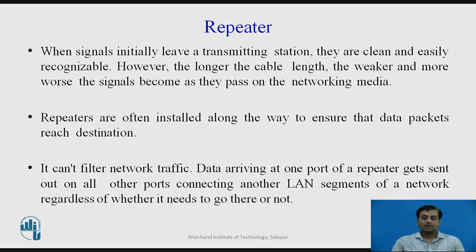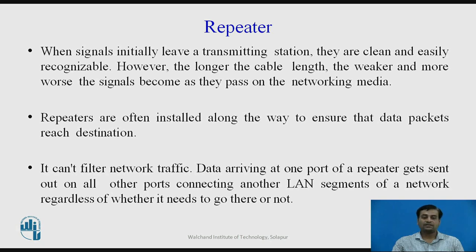When a signal initially leaves the transmission station it is clean and easily recognizable; however, as it travels along the cable length it gets weaker. Repeaters are often installed along the way to ensure data packets reach the destination in a recognizable state. Importantly, a repeater cannot filter network traffic — data arriving at one port is sent out on all other ports regardless of whether it needs to go there or not.